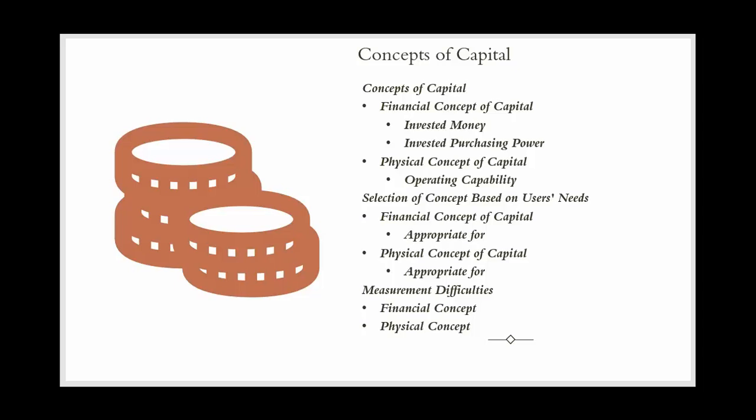For example, XYZ Manufacturing has machinery that produces 10,000 units of product per day. The physical capital of XYZ Manufacturing is its ability to produce these 10,000 units daily. If XYZ Manufacturing maintains or increases this production capability over time — for example, by repairing or upgrading machinery — it is said to maintain its physical capital.